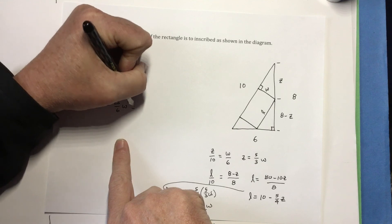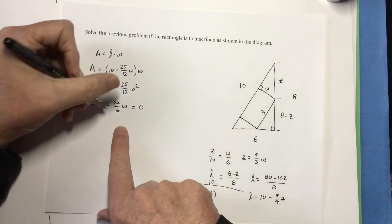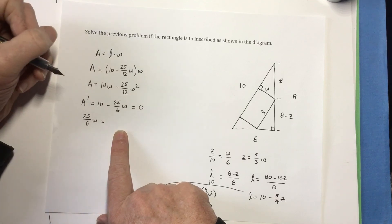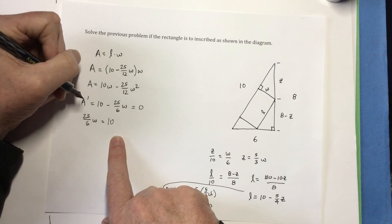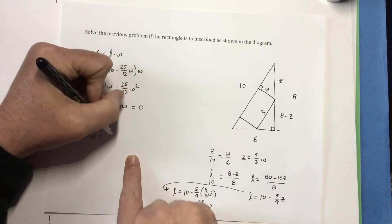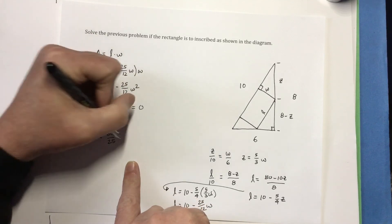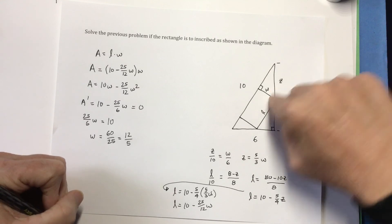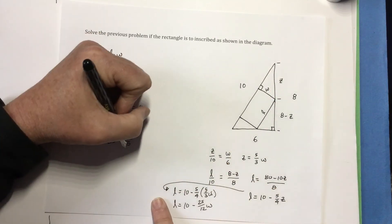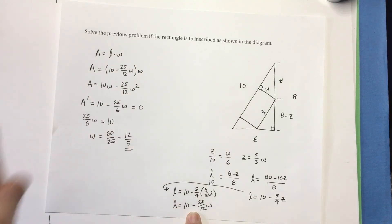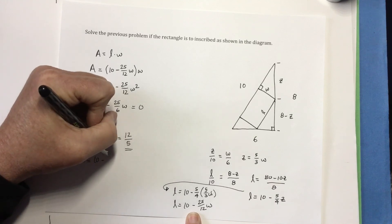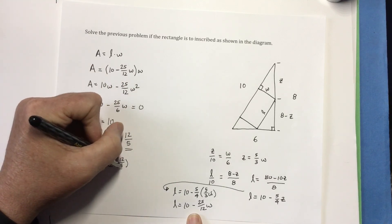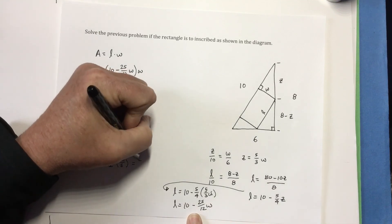Now, I want to set that equal to zero. Find the critical point. So, this tells me that 25 over 6 times W is equal to 10. That means that W is equal to 60 over 25, which can be reduced to 12 over 5. So, this W here is 12 over 5. I know that L is this. That means L is equal to 10 minus 25 twelfths times W, which is 12 fifths. The 12 cancels out. The 5 goes into 25 five times. This is 10 minus 5, or just 5.